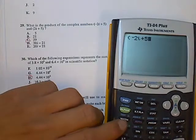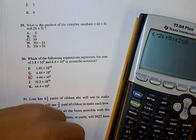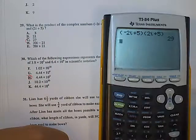So it's negative 2i plus the 5. And then you just multiply that by 2i plus 5. And if you enter it, it should give you the answer, which is 29.